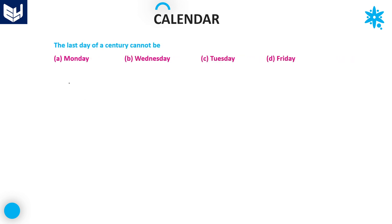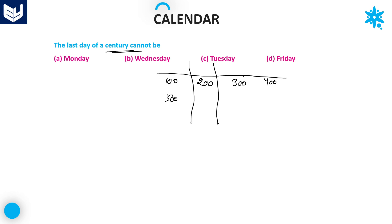Next question: the last day of a century cannot be... As we discussed in previous sessions, for every century the number of odd days are: 5 for 100 years, 3 for 200 years, 1 for 300 years, and 0 for 400 years. For every multiple of 400, the number of odd days is 0. Here 5 indicates Friday according to the standard format.